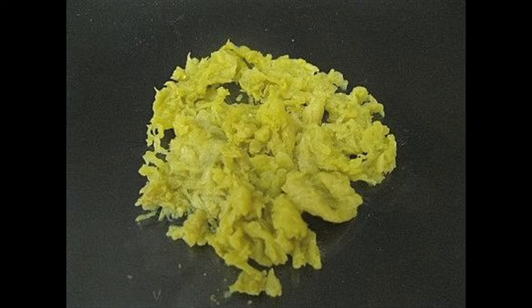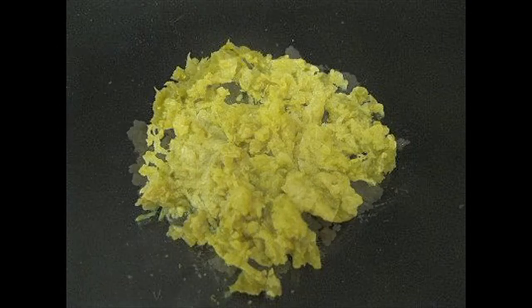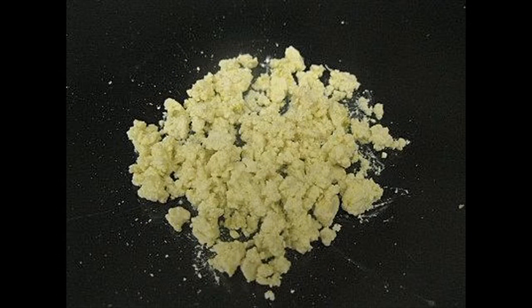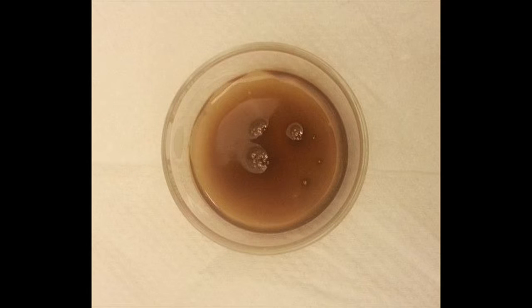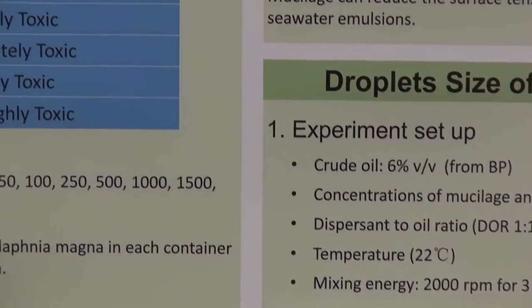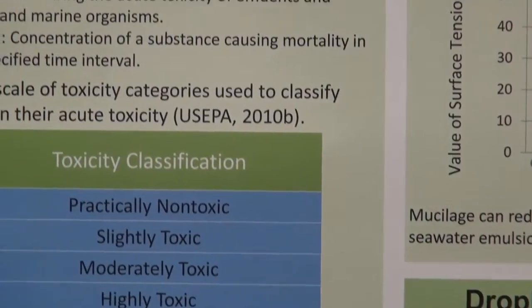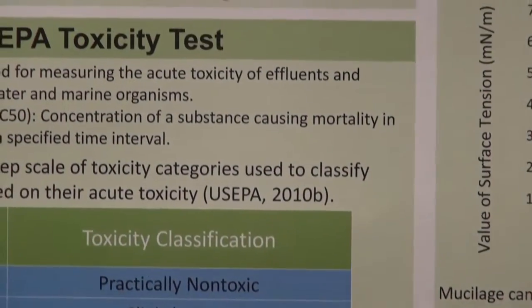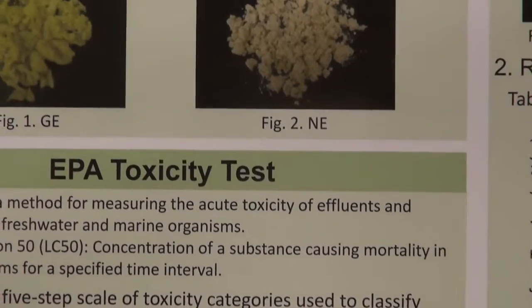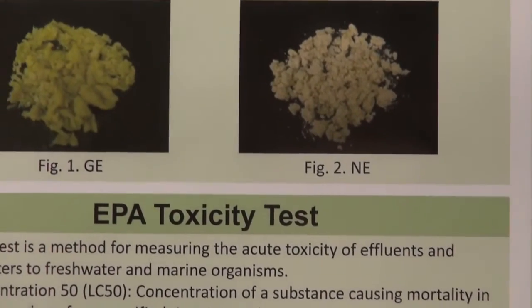This is new research on the use of the dispersant for the spilled oil. Because for the chemical dispersant, most of the chemical dispersants have toxicity potential. But for this one, this is the biomaterial. The cactus is a food resource, so it's totally non-toxic.